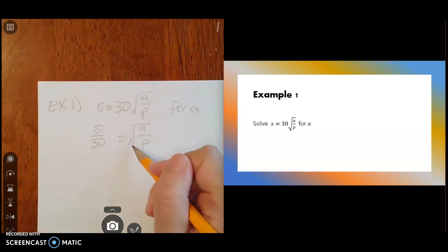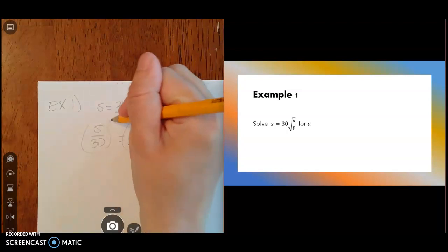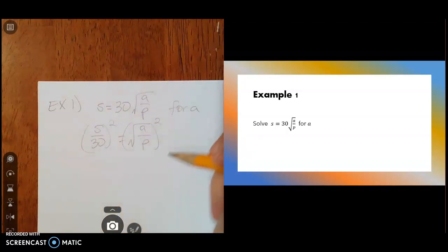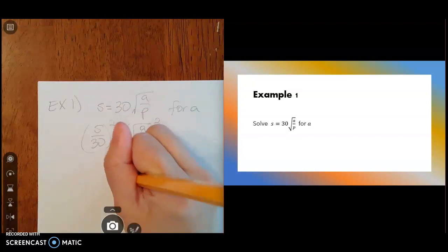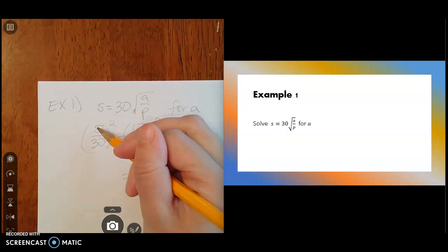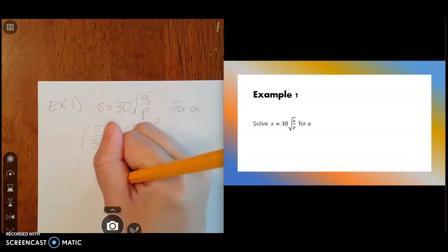Now that I have the radical by itself, I can undo the square root by squaring both sides. So the squaring and the square rooting are opposite operations. We'll have A over P on that right side. On the left side, S squared is just S squared. 30 squared is 900.